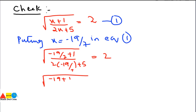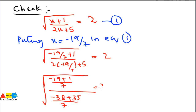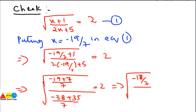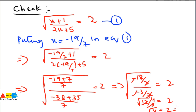Taking the LCM for the numerator: (-19 + 7) / 7 = -12/7. For the denominator: (-38 + 35) / 7 = -3/7. So we get the square root of (-12/7) ÷ (-3/7) = 2. The 7s cancel and the negatives cancel, giving us the square root of 12/3 = 2, which is the square root of 4 = 2, confirming 2 = 2.